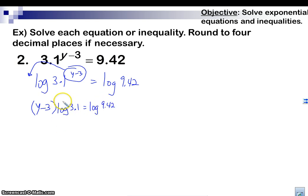y minus 3 times log 3.1 equals log 9.42. Now, watch this. We're going to take this entire thing, this log thing here, and we're going to multiply it and distribute like that. So, we're going to have y log 3.1 minus 3 log 3.1 equals log 9.42.